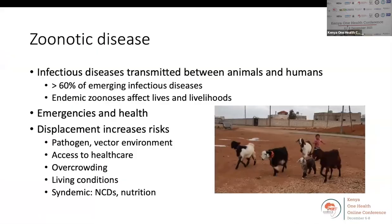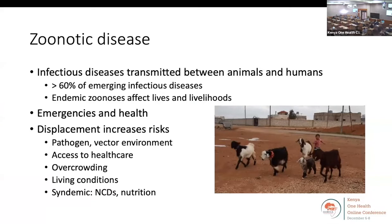Using a conservative estimate, over 60% of emerging infectious diseases are of zoonotic origin. However, of more importance to the health and daily lives of livestock-dependent populations are endemic zoonoses, such as brucellosis and bovine tuberculosis. During emergencies, the aftermath of conflict and disasters exacerbates ill-health outcomes, while displacement further affects risks due to changing pathogens and disease-factor environments, challenging living conditions, and access to healthcare.